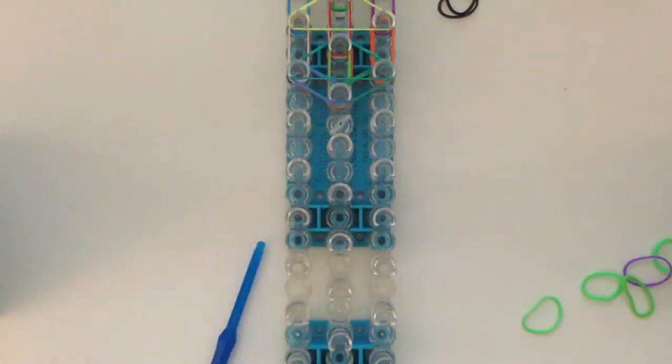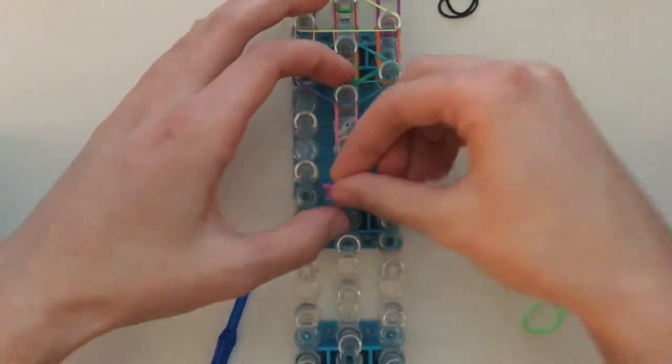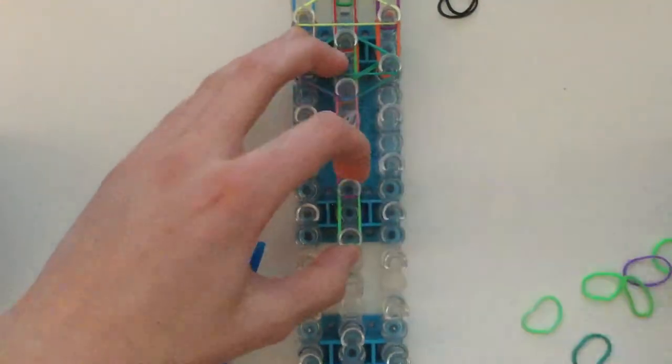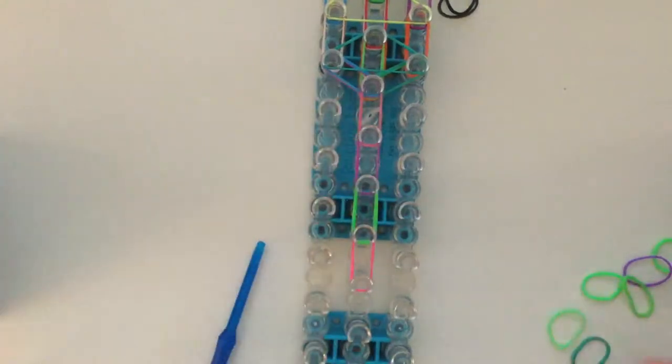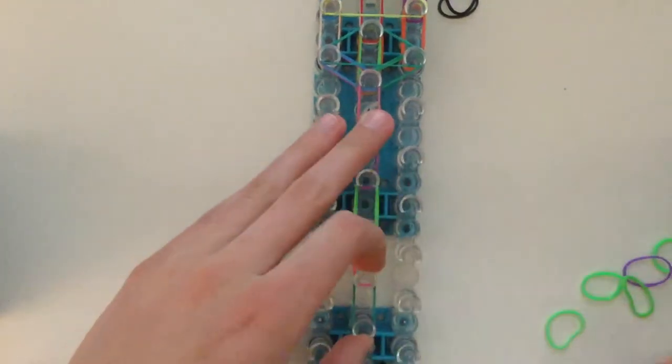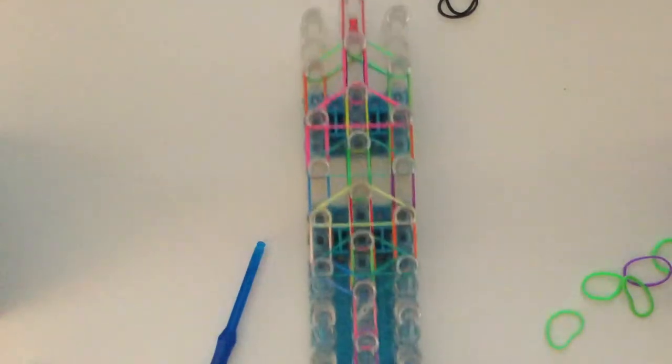We're going to take single bands and we're going to go the rest of the way down the loom. Single bands. I'm making sure that I don't put the same color next to each other. So, I'm not going to put two greens next to each other. I'm not going to put two oranges next to each other. Nothing like that.